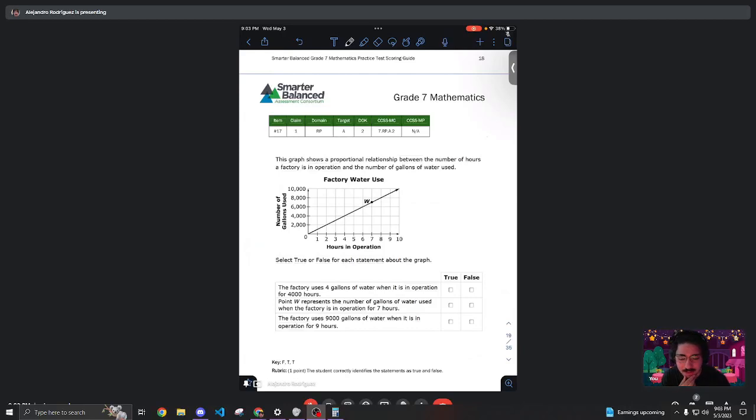Alright, moving on to question 17. This graph shows a proportional relationship between the number of hours a factory is in operation and the number of gallons of water used.